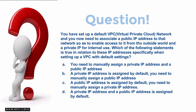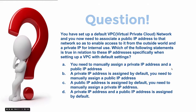Let's read through this one. You have set up a default VPC network and you now need to associate a public IP address to that network so as to enable access to it from the outside world, and a private IP for internal use. Which of the following statements is true in relation to these IP addresses, specifically when setting up a VPC with default settings? Do you need to manually assign both a private and a public IP? Is a private IP assigned by default and you need to manually assign a public? Or is a public assigned by default and you need to manually assign a private? Or do both the private and public IP addresses get assigned by default?